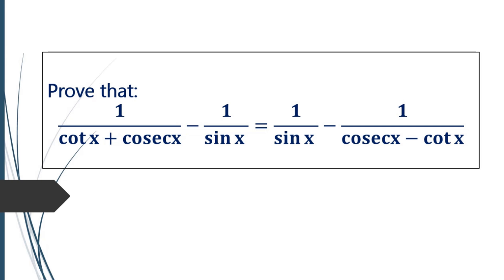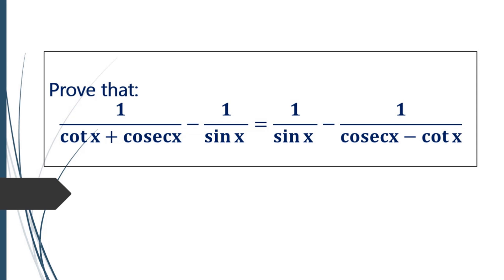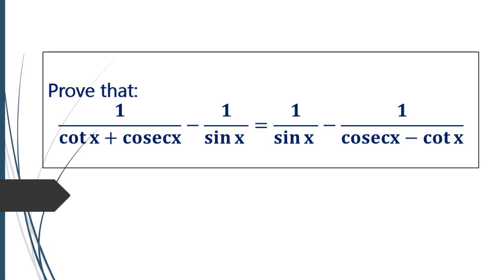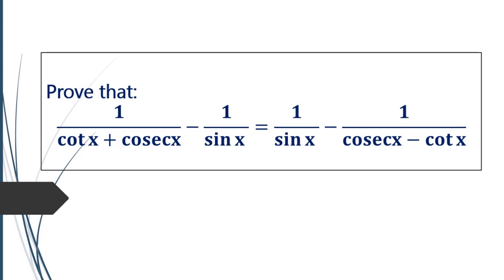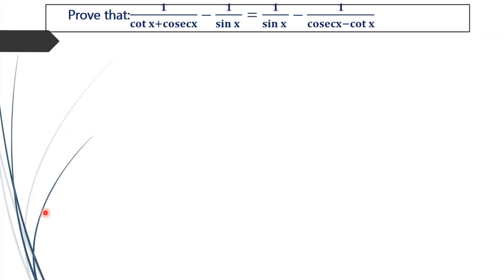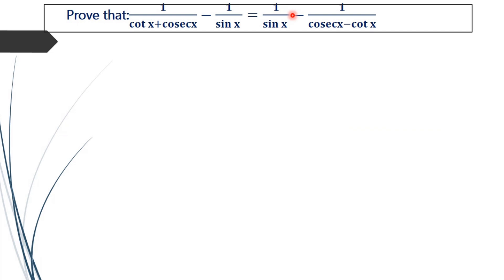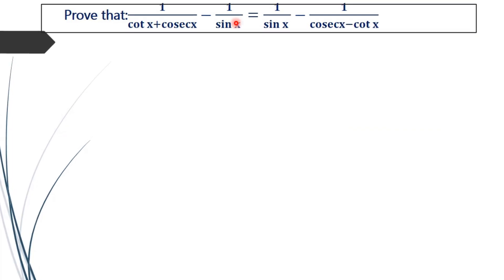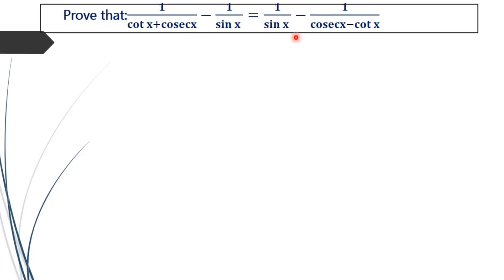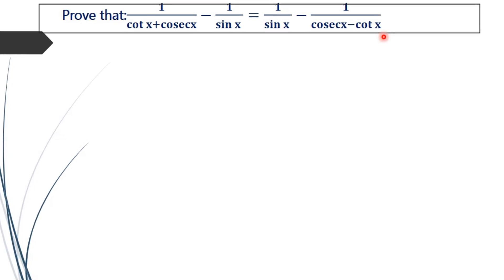Trigonometry: prove that 1 by cotx plus cosecx minus 1 by sinx equals 1 by sinx minus 1 by cosecx minus cotx. We have to prove that the LHS of this equation is equal to the RHS, that is 1 by cotx plus cosecx minus 1 by sinx equal to 1 by sinx minus 1 by cosecx minus cotx.